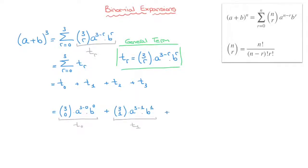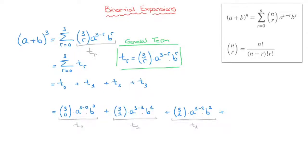For t2, r equals 2, giving binomial coefficient 3,2 times a raised to the power of 3 minus 2 times b raised to the power of 2. Finally, for t3, r equals 3, giving binomial coefficient 3,3 times a raised to the power of 3 minus 3 times b raised to the power of 3. We've now written all four terms in the expansion of a plus b raised to the power of 3.